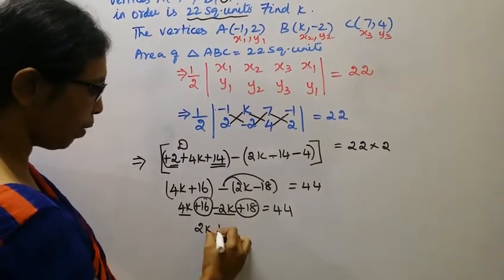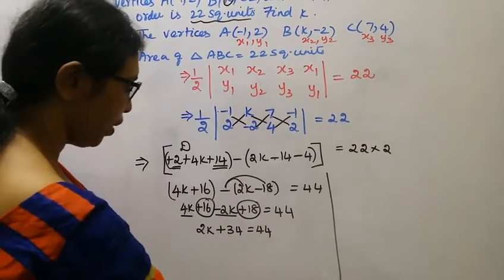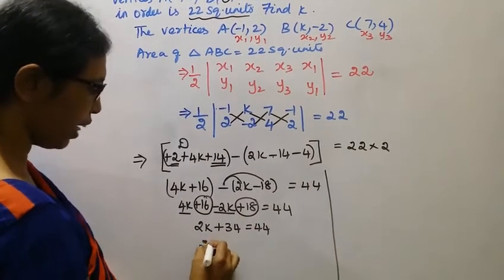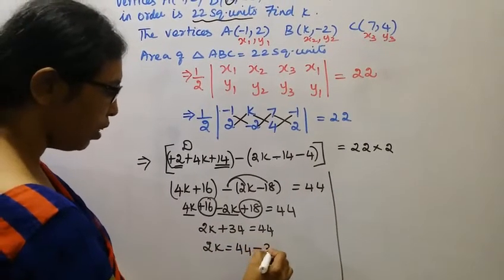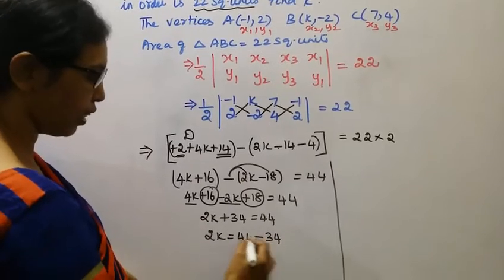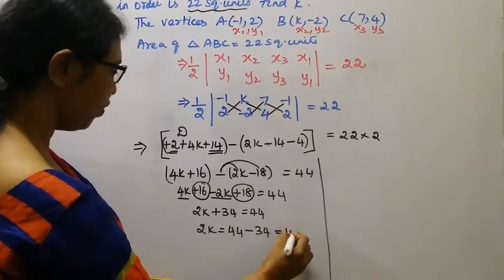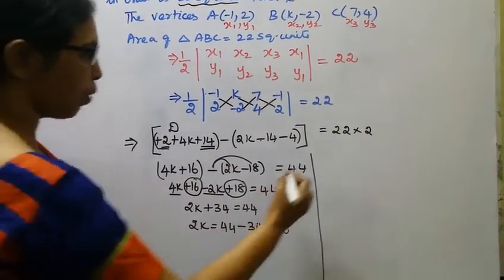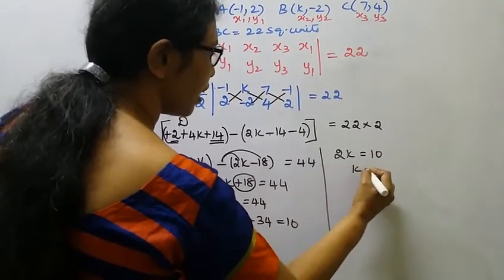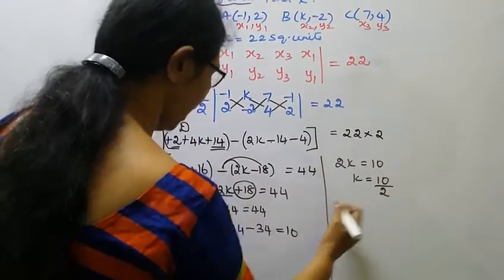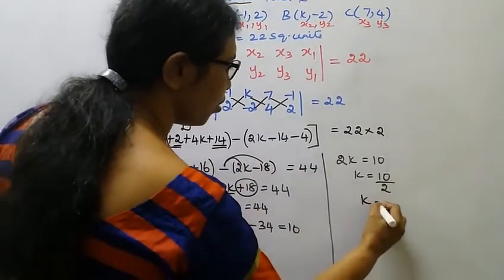2k plus 34 equal to 44. So 2k equal to 44 minus 34. 44 minus 34 is 10. So 2k equal to 10. k equal to 10 by 2. k equal to 5.